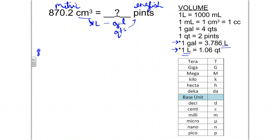So I'm going to put my given 870.2 centimeters cubed over 1 times draw a line. And we know from our conversion factors here that 1 centimeter cubed is equal to a milliliter.